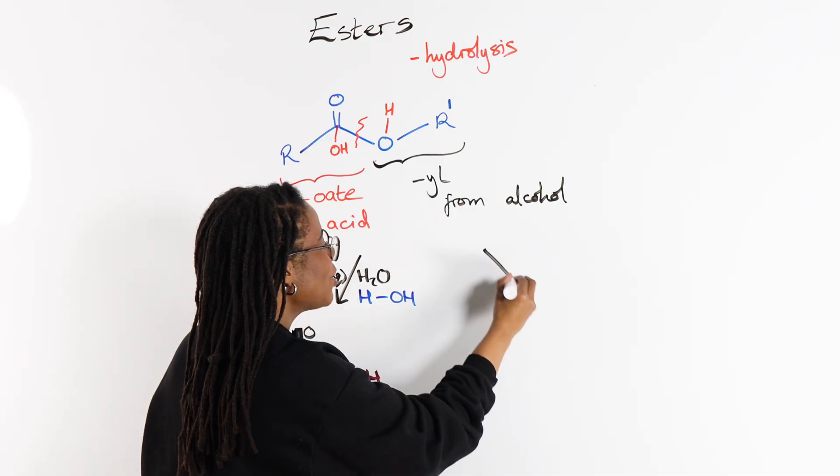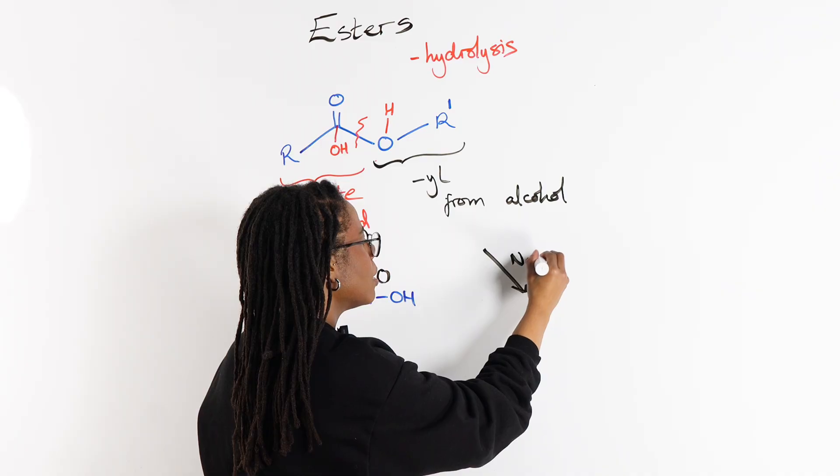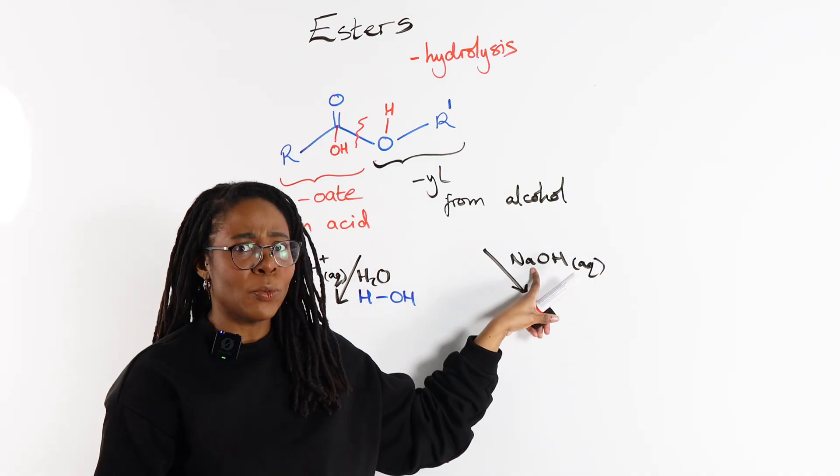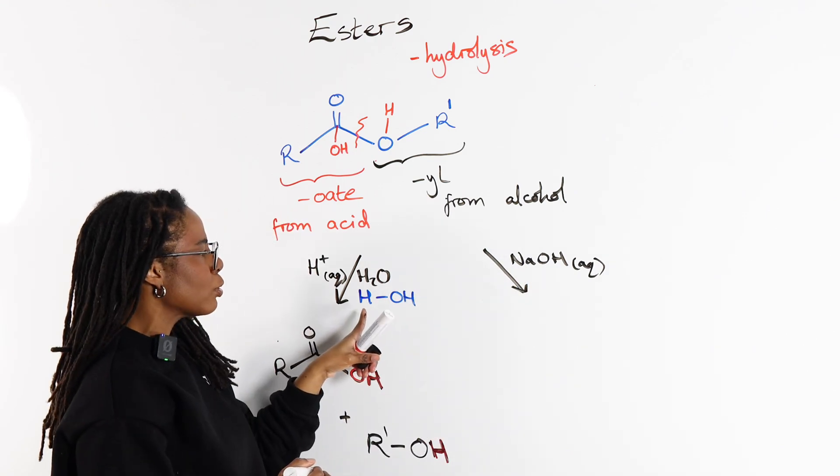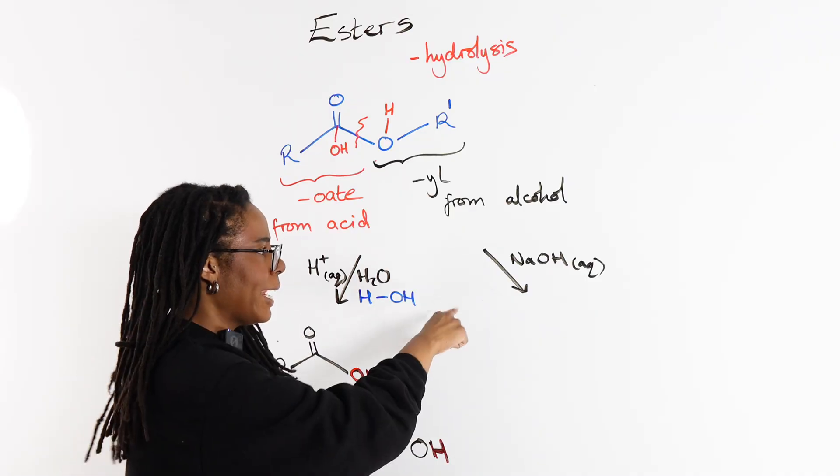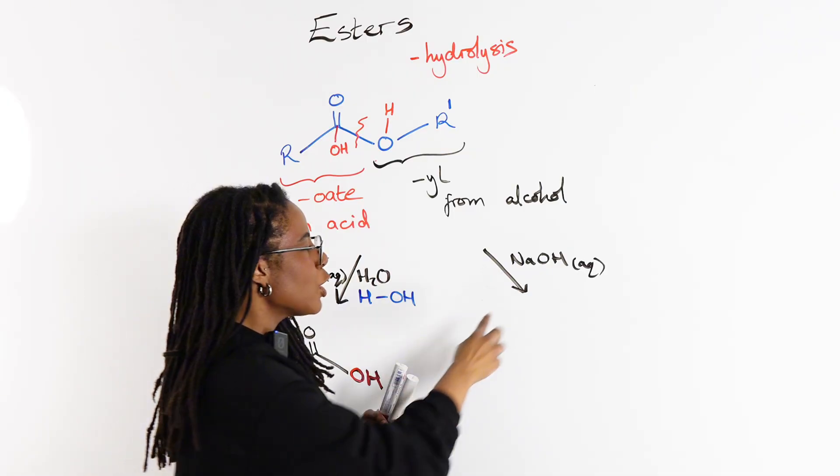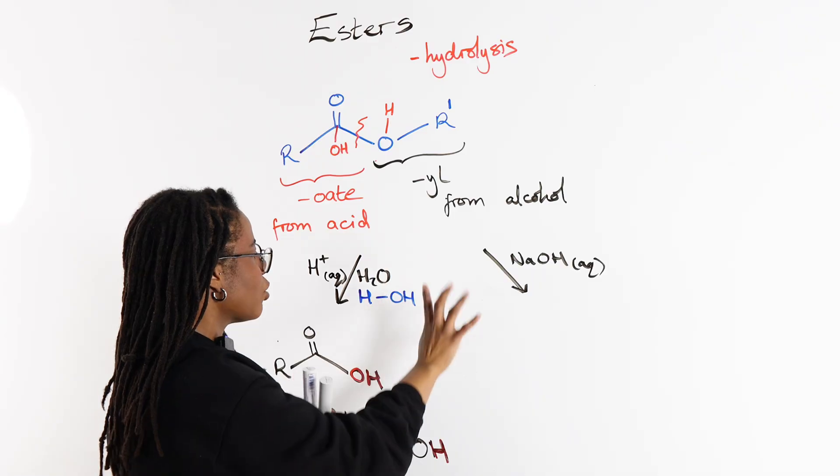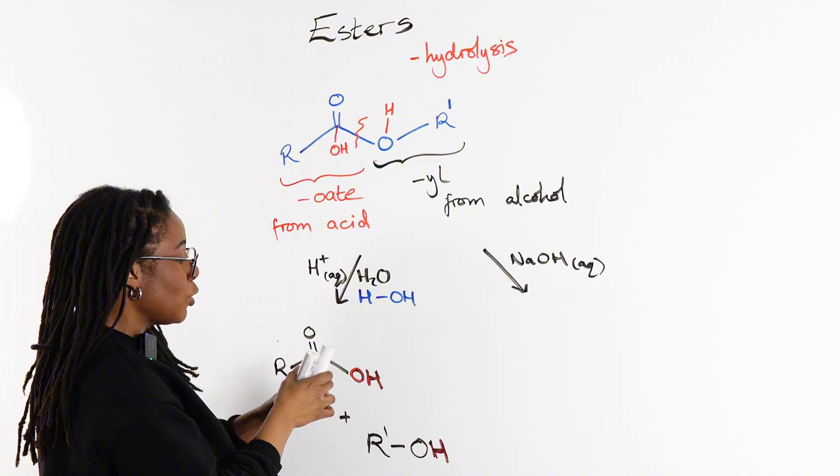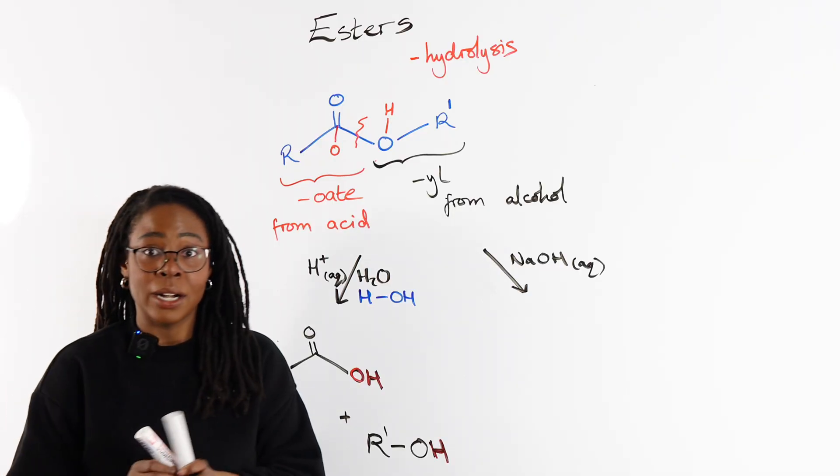Now if we were to do this under basic conditions—so typically you will see sodium hydroxide being used, aqueous sodium hydroxide—we can think of it in the same way that we thought of water as HOH. Sodium hydroxide is literally just NaOH. Because we're under basic conditions, we're not going to have an extra H+ to have our acid protonated.